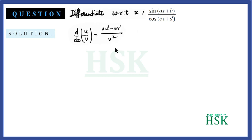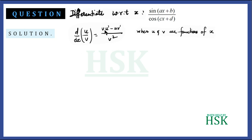To solve this question we should know the quotient rule. If u and v are functions of x, then d/dx of (u/v) is equal to: v times u' minus u times v', where u' represents d/dx of u and v' represents d/dx of v, all upon v squared.